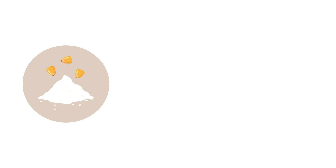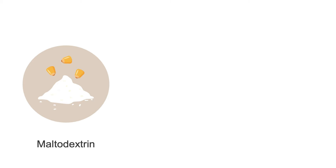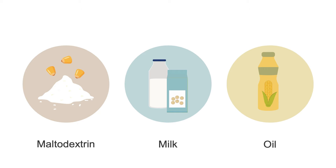The first thing to know about tube feeding formulas is what they're made of. The carb source in most tube feeds is corn-derived maltodextrin, which is a simple carbohydrate. The protein source is typically milk and/or soy-derived, and the fat source is oil from soy, corn, canola, or safflower, with some tube feeds containing medium-chain triglycerides, or MCT oil, an easily absorbed fat.